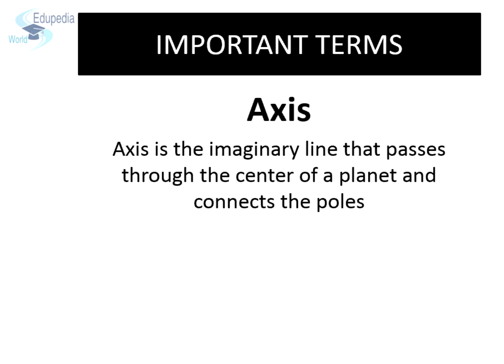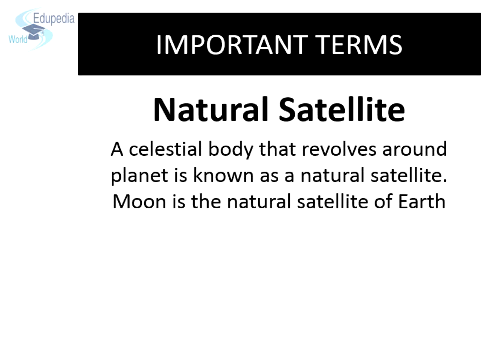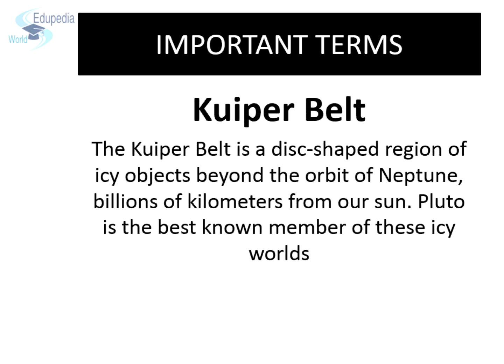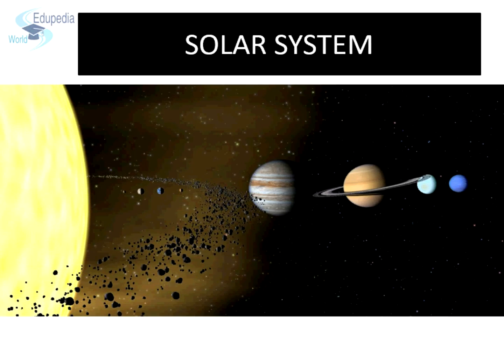Axis is the imaginary line that passes through the center of a planet and connects the poles. A natural satellite is a celestial body that revolves around a planet — the Moon is the natural satellite of Earth. The Kuiper belt is a disc-shaped region of icy objects beyond the orbit of Neptune. It is billions of kilometers away from the Sun, and Pluto is its best known member. Our solar system comprises the Sun, eight planets and their satellites, dwarf planets, asteroids, meteorites, and comets.